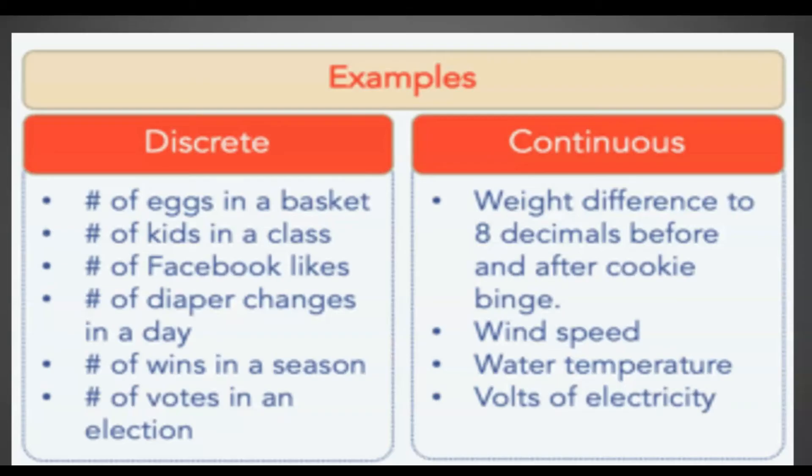Number of wins in a season — you can count it, therefore it is discrete. And lastly, number of votes in an election — you can definitely count it, therefore they are considered a discrete random variable.